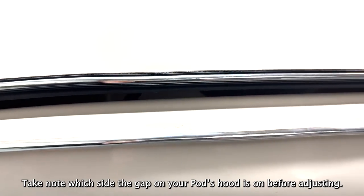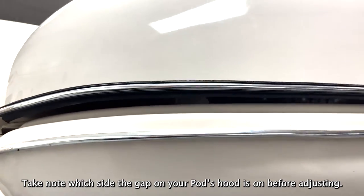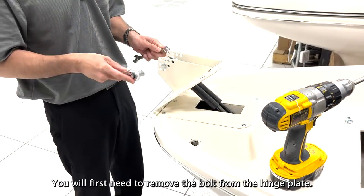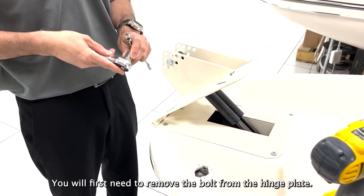Take note which side the gap on your pod's hood is on before adjusting. You will first need to remove the bolt from the hinge plate.